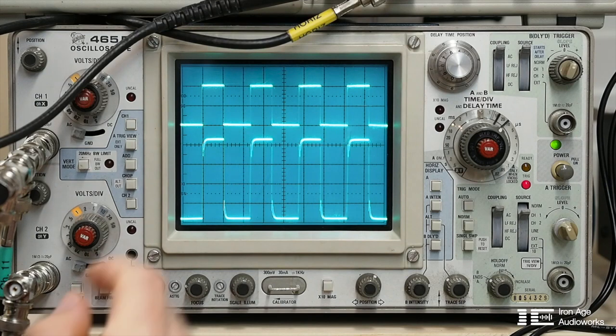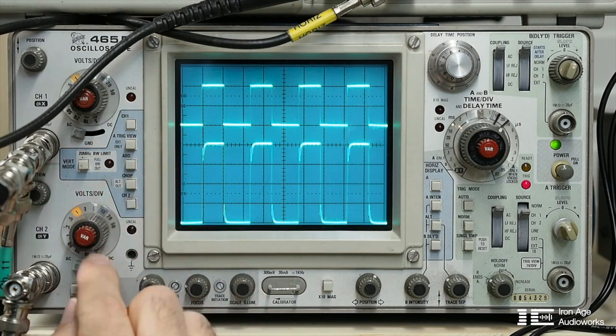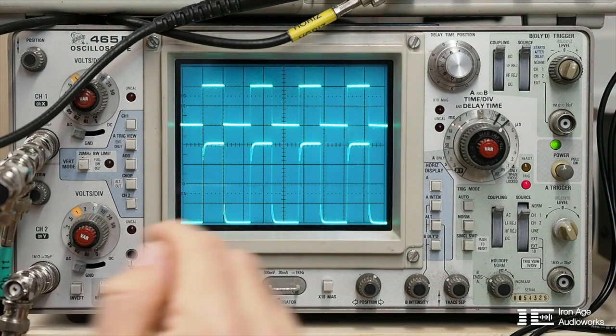Now coming out, I can measure here at one volts per division again. It's one, two, three, four volts peak to peak.